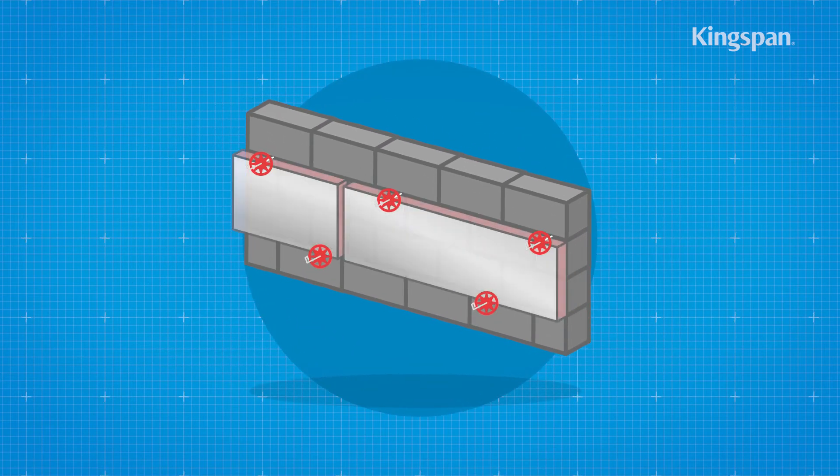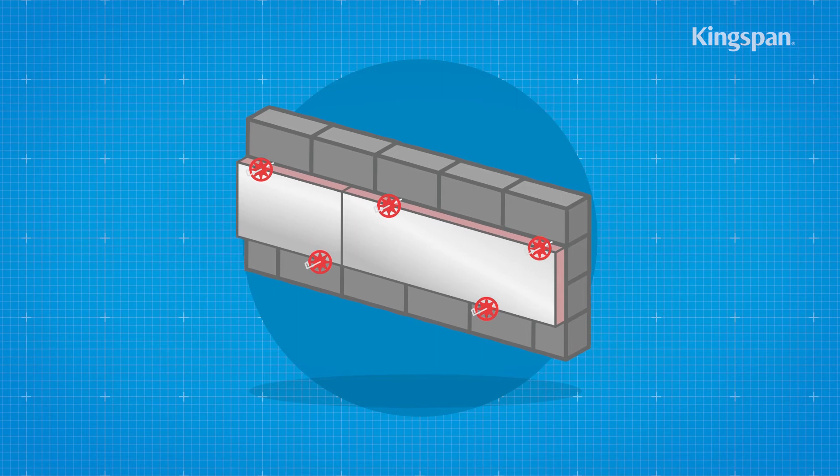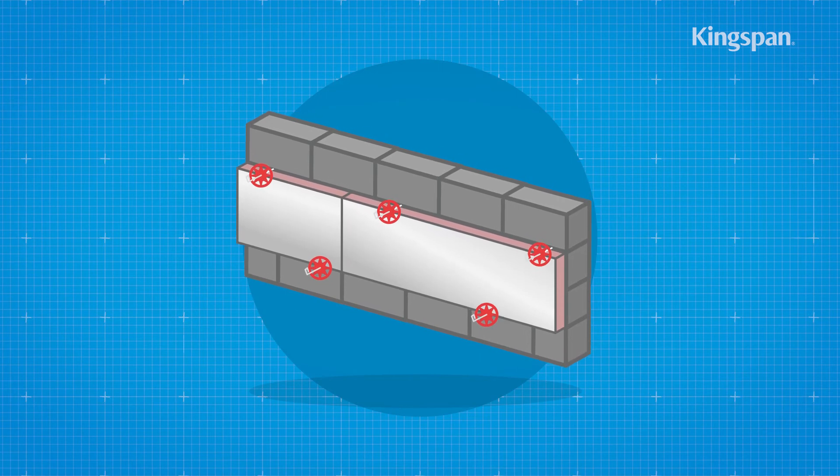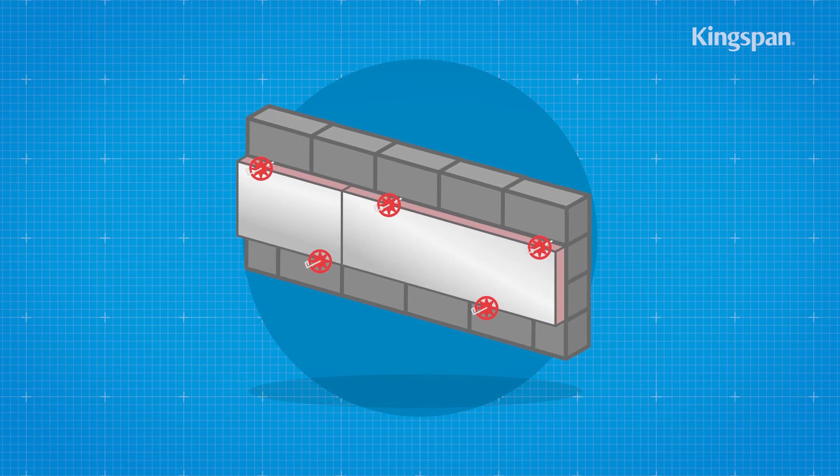The first row of insulation boards should now be installed between the two rows of wall ties. Ensure each insulation board is retained tight against the inner leaf and joints are butted.